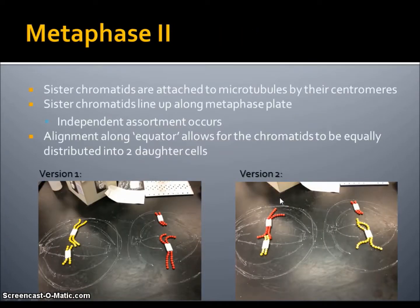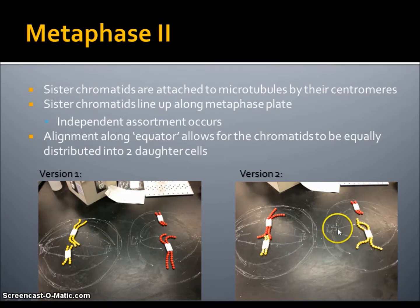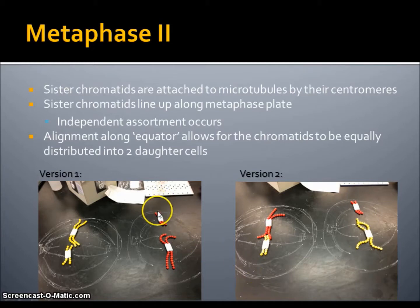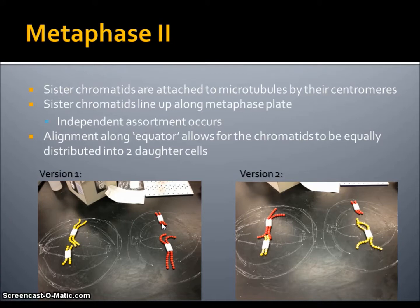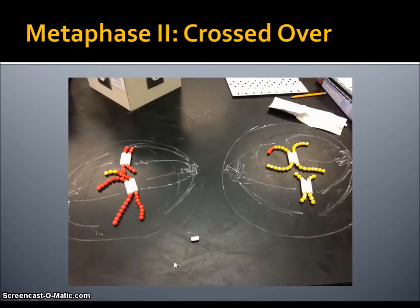Metaphase II is when the sister chromatids are attached to the microtubules by their centromeres, which we can observe here — in each cell they're attached to microtubule kinetochores. The sister chromatids line up along the metaphase plate. Independent assortment can again occur, just as it did in metaphase I, and the alignment along the equator allows for the chromatids to be equally distributed into two new daughter cells per cell. For our metaphase II crossed-over pair, it's very similar to version 1, except we have to remember that crossing over had occurred.